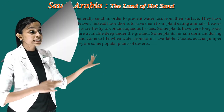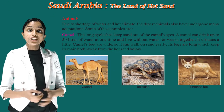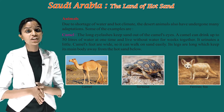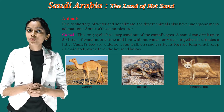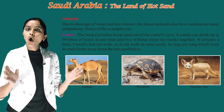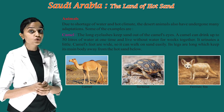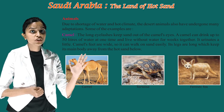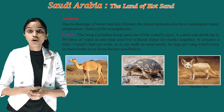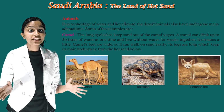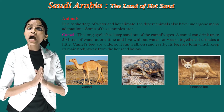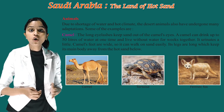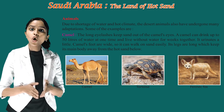Now children, see the animals found in deserts. Due to shortage of water and hot climate, desert animals have also undergone many adaptations. Some examples include the camel. The camel's long eyelashes keep sand out of its eyes. A camel can drink up to 50 liters of water at one time and live without water for weeks. It urinates very little. The camel's feet are wide so it can walk on sand easily, and its legs are long, keeping its main body away from the hot sand below.